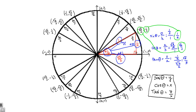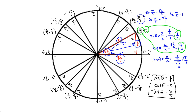So for every single unit circle angle, we can determine the sine, cosine, and tangent based on the coordinates. For pi over 4, the sine of pi over 4 is my y coordinate, which is radical 2 over 2. The cosine of pi over 4 is my x coordinate, which also happens to be radical 2 over 2. And the tangent of pi over 4 would be y over x — radical 2 over 2 divided by radical 2 over 2 — which gives 1. My y value is the sine, my x value is the cosine, and y over x gives you the tangent.